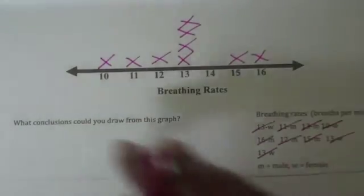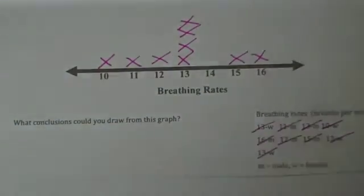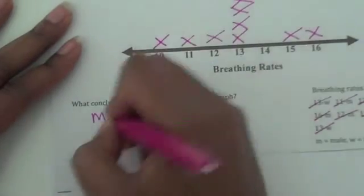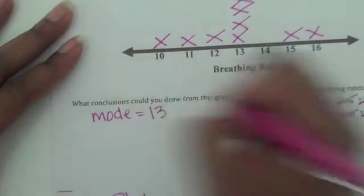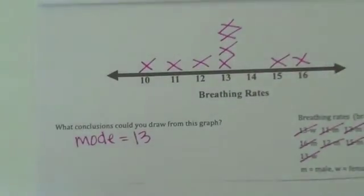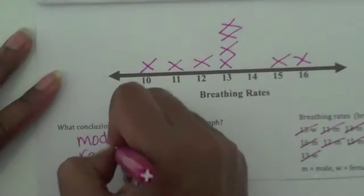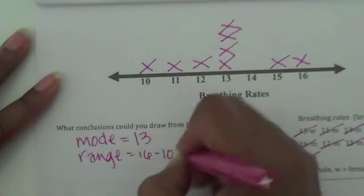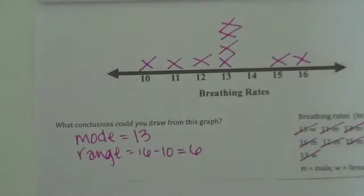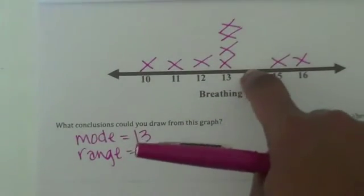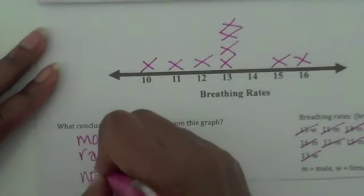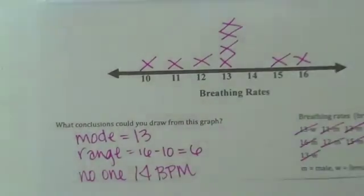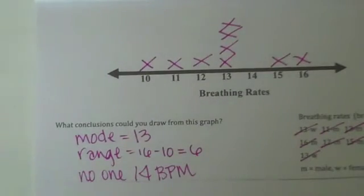We just put an X every time that value occurs. Some useful conclusions involve measures of central tendency. The mode is 13 because it occurs the most often. I can also easily identify the range: the highest 16 minus the lowest 10 gives a range of 6. I can also see that no one had 14 breaths per minute. Those are just a few conclusions we can make from the line plot.